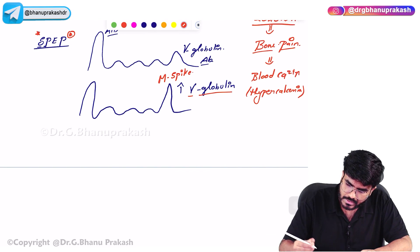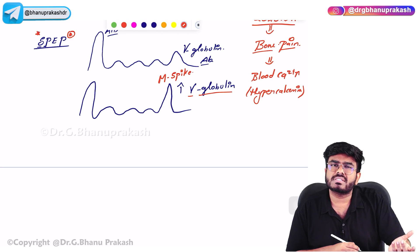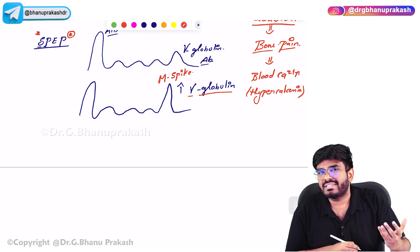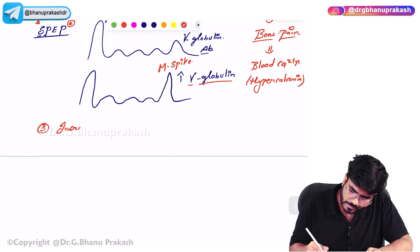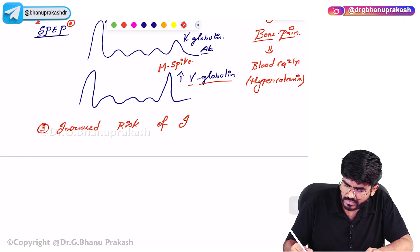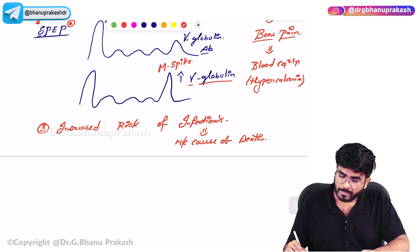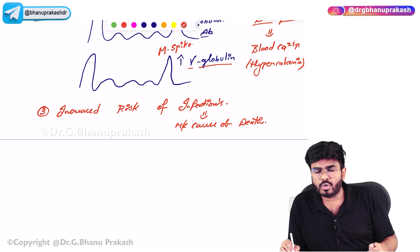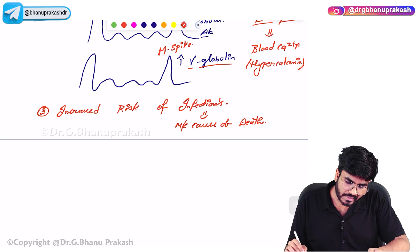These patients have lots and lots of antibodies — too many — but they are useless, good for nothing. They do not have any antigenic diversity. So these patients are at increased risk of infections, and that is the most common cause of death in multiple myeloma patients. Multiple myeloma is typically seen in older individuals who get recurrent infections and usually die from them.